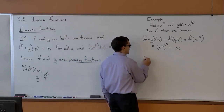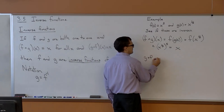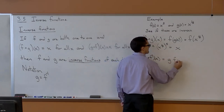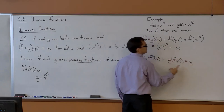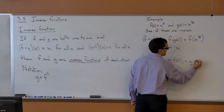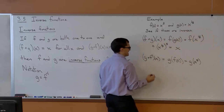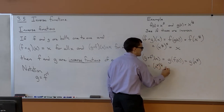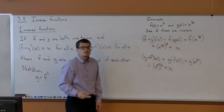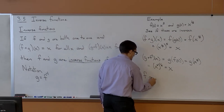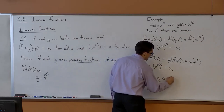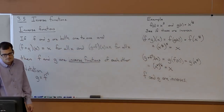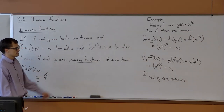That side works. You can see what's going to happen with the other side as well. If you did G of F of X, we put the expression X to the fifth into G, replacing the input of G with X to the fifth. Sure enough, we get back X. So F and G are inverses. Those are inverses — you can check it that way.